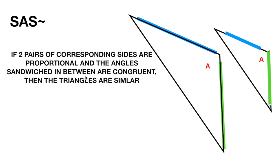Then the triangles are similar. Notice that we didn't talk about these other two angles — we only focus on the angle being sandwiched by the two sides. That's why it's side-angle-side and not SSA or ASS. It's side-angle-side.